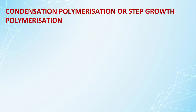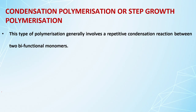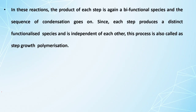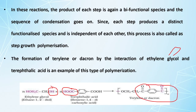In condensation or step growth polymerization, monomers must have two different functional groups — they should be bifunctional. This polycondensation generally occurs between two bifunctional monomers and may result in the loss of a small molecule like water or alcohol, forming a larger molecule. The product of each step is again a bifunctional species, allowing the reaction to continue.